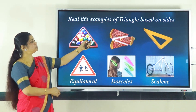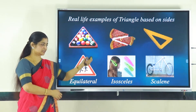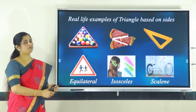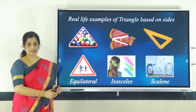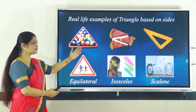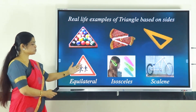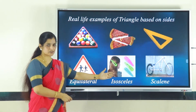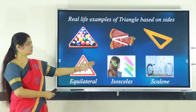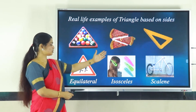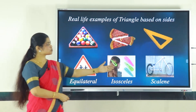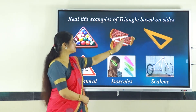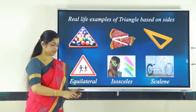Now, real-life examples of triangles based on sides: equilateral triangles have all three sides equal — here are two examples you must have seen. Isosceles triangles have two equal sides and one different side. And the scalene triangle has all three sides of different measurements. This is the classification based on sides.